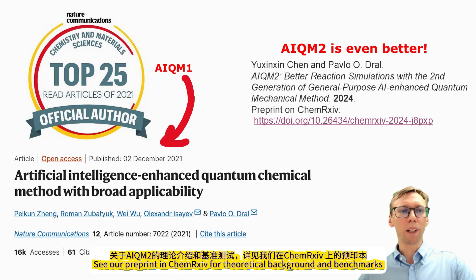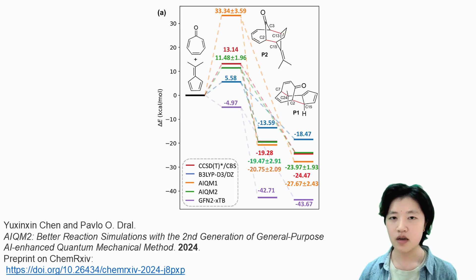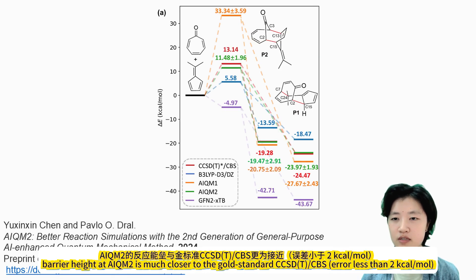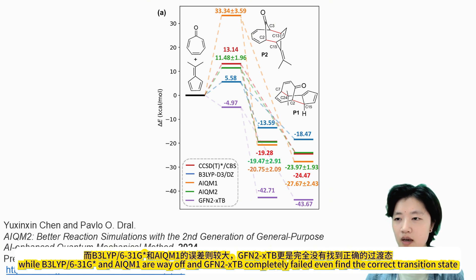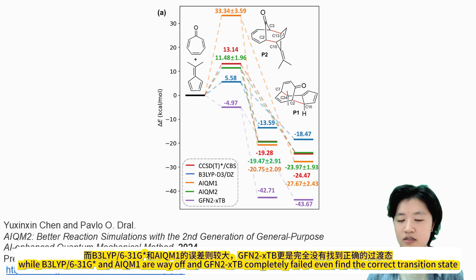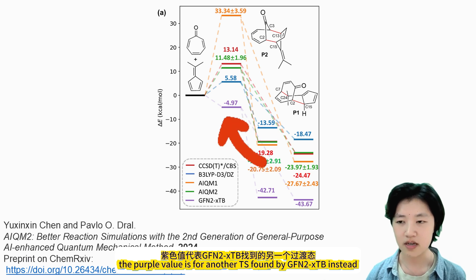See our preprint on ChemRxiv for theoretical background and benchmarks. Take for example this pericyclic reaction: the barrier height in AIQM2 is much closer to the gold standard CCSD(T), with an error less than 2 kcal/mol, while B3LYP and AIQM1 are way off. GFN2-xTB completely failed, even finding the correct transition state — the purple value is for another transition state found by GFN2-xTB instead.